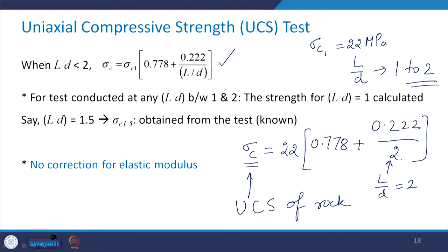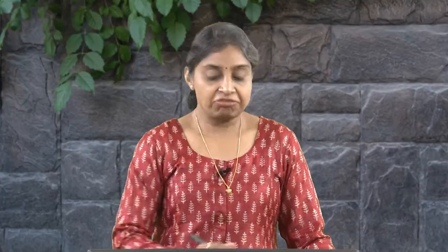As far as elastic modulus is concerned, no correction is required because it has been seen that L/D ratio does not affect the elastic modulus to the same extent as it affects UCS. Whatever value of elastic modulus you obtain — say for L/D = 1.5 — that value can be taken as the elastic modulus of that rock.